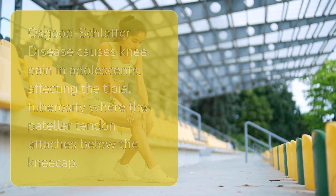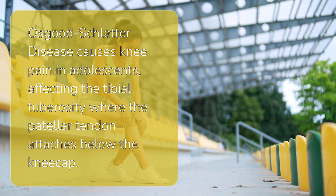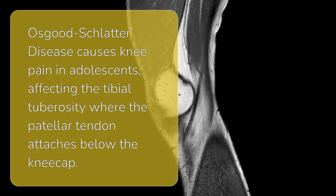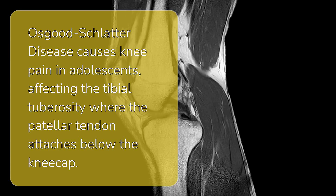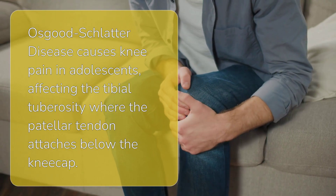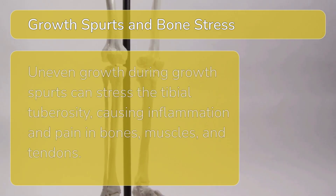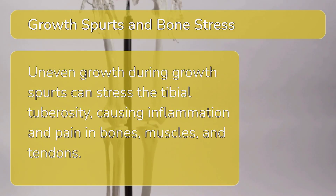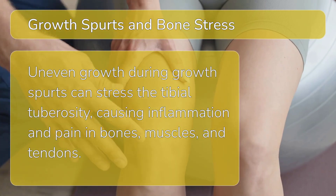Osgood-Schlatter disease is a common cause of knee pain in growing adolescents. It affects the tibial tuberosity, the bony bump just below the kneecap where the patellar tendon attaches. During growth spurts, bones, muscles, and tendons don't always grow at the same rate. This can put extra stress on the tibial tuberosity, leading to inflammation and pain.